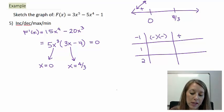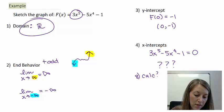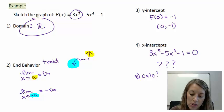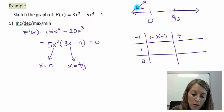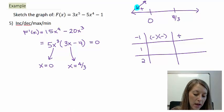That should be pretty obvious because on our end behavior, we said that the very left-hand side of the graph is going down forever. So that should confirm with this here that it's going down forever.